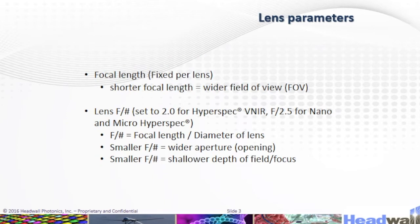Here we have the lens parameters. Focal length is fixed per lens. A shorter focal length gives a wider field of view. The F-number will be set to 2.0 for Hyperspec VNIR and 2.5 for Nano and Micro Hyperspec. F-number equals focal length divided by the diameter of the lens.